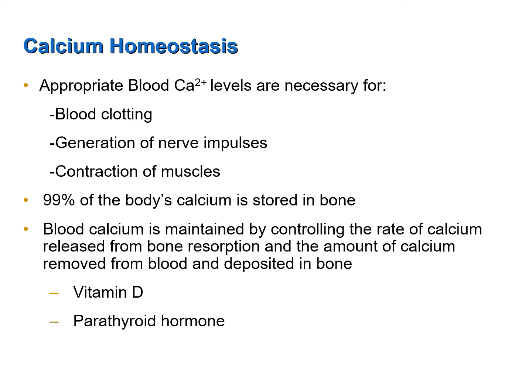Blood calcium is also maintained by controlling the amount of calcium removed from the blood and deposited in bone by the osteoblasts. The principal hormones that control these two processes are vitamin D and parathyroid hormone.